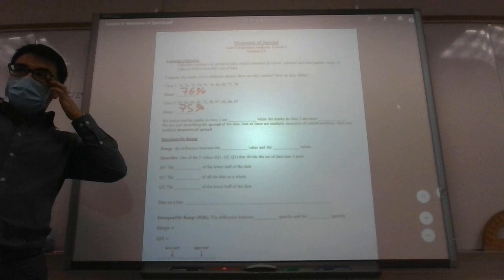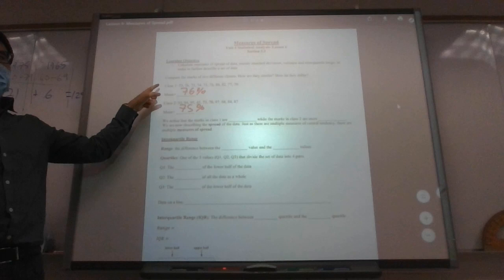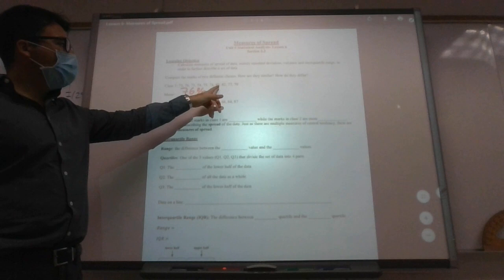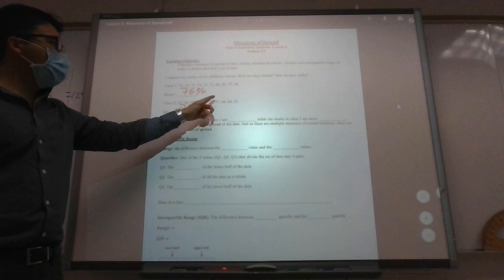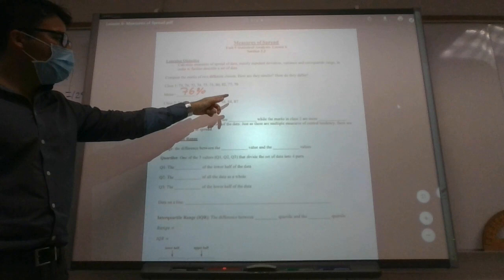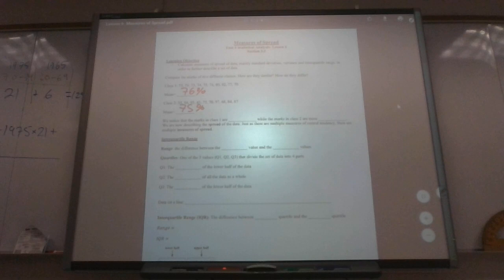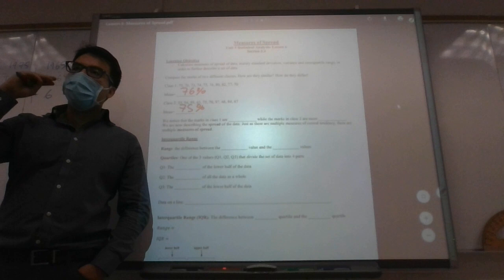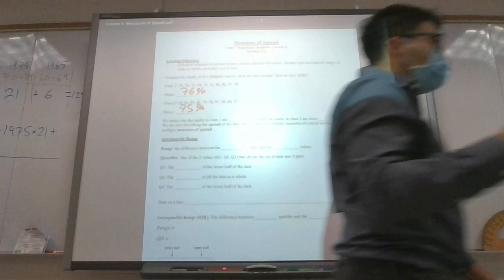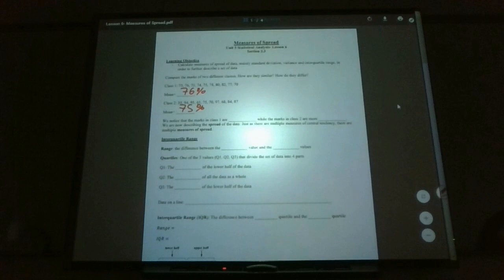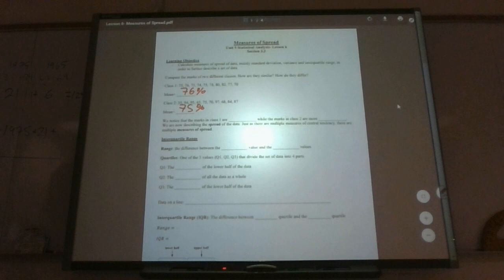Class one has pretty consistent marks — everyone is in the seventies or eighties. No one's doing super duper well, but they're all where they need to be. Class two has a lot more variation — some really high marks, eighties, nineties, but then extremely low marks like 45 and 35. Those low marks drag down the mean quite a bit. So even though the classes might look similar, there are subtle differences. Class one marks are closer to each other, while class two marks are more spread out.